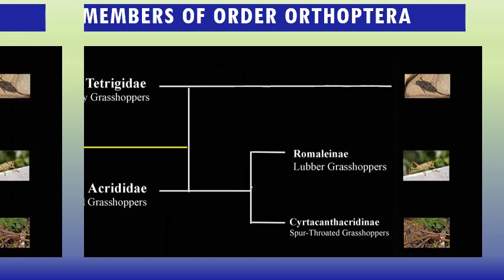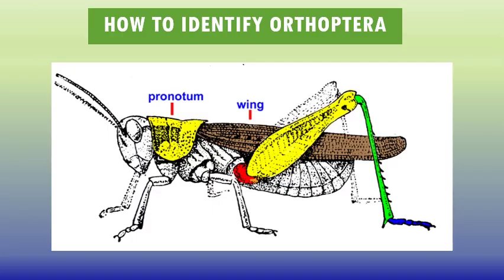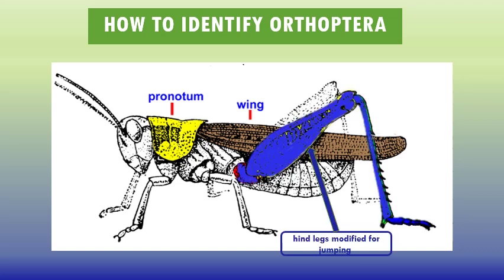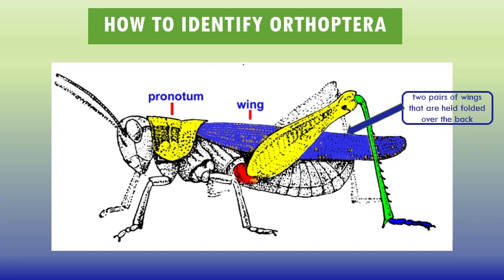The general structure of Orthoptera: the body is divided into three regions — head, thorax, and abdomen — with three pairs of legs. To identify Orthoptera: hind legs are modified for jumping, with an enlarged hind femur; two pairs of wings held folded over the back, also known as tegmina; and a large pronotum.